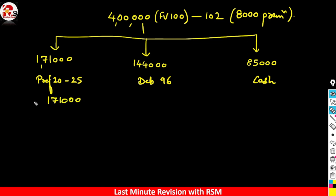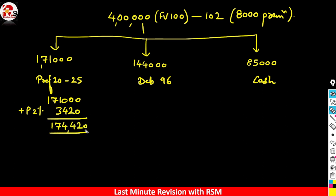For option 1, our amount is 1,71,000. We need to add the 2% premium to it. So calculate 2% of 1,71,000 — that gives 3,420. Then 1,71,000 plus 3,420 equals 1,74,420. This total amount needs to be divided by the issue price of the preference shares. The preference shares have a face value of 20 and are being issued at 22.50, so we will divide by 22.50.